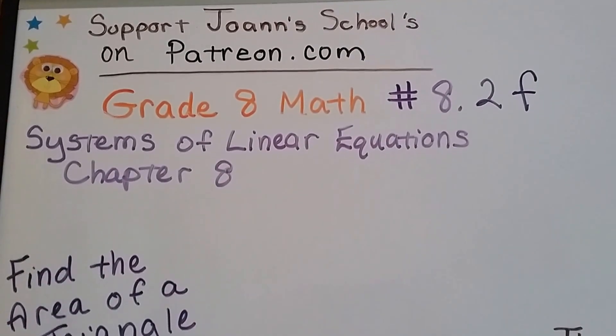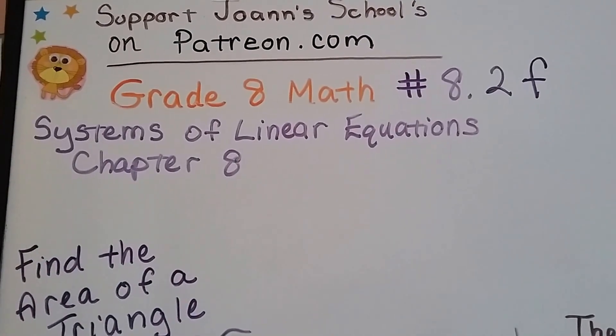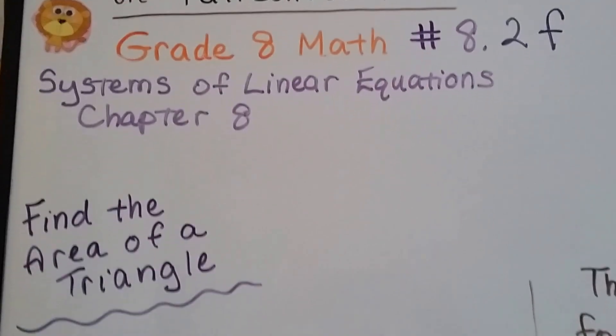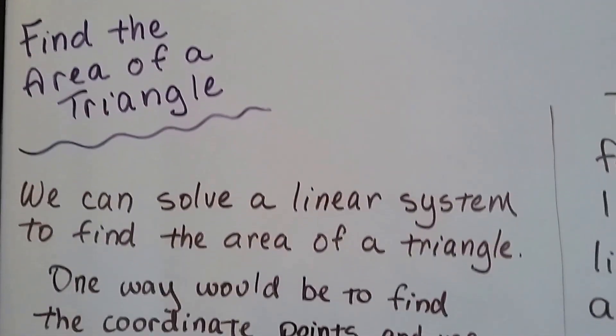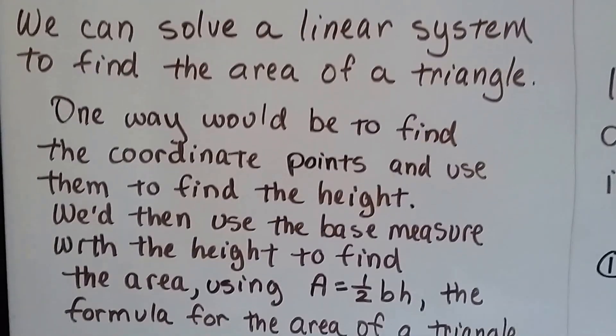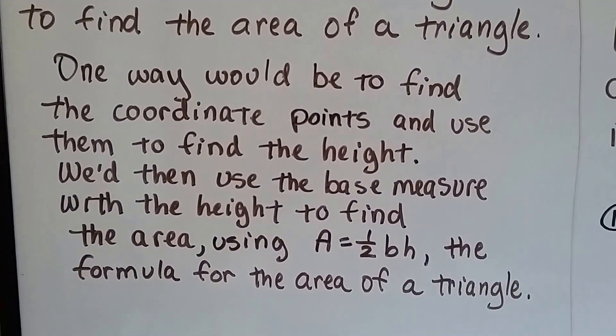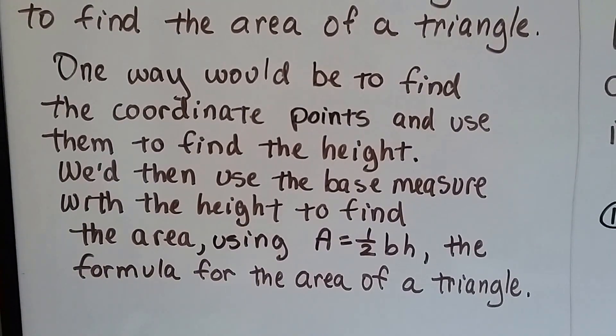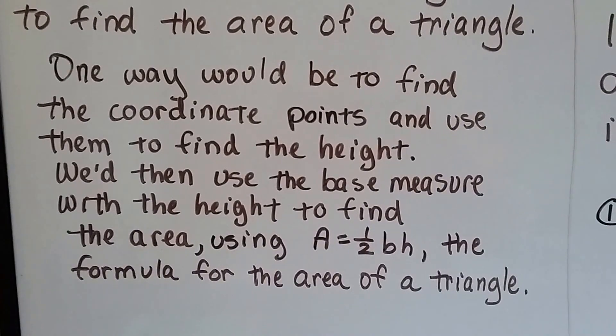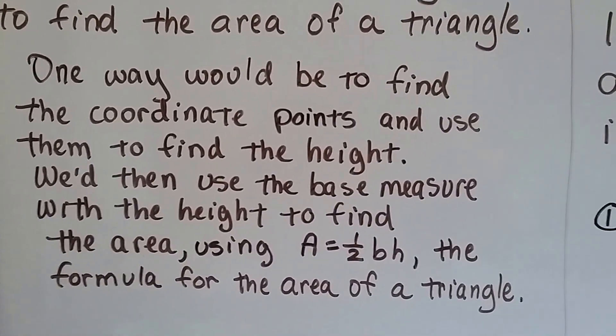Grade 8 math number 8.2f. This entire chapter 8 is about systems of equations, and our entire unit 2 is about substitution. So we're going to find the area of a triangle. We can solve a linear system to find the area of a triangle. One way would be to find the coordinate points and use them to find the height. We'd then use the base measure with the height to find the area using A equals half bh. That's the formula for the area of a triangle.